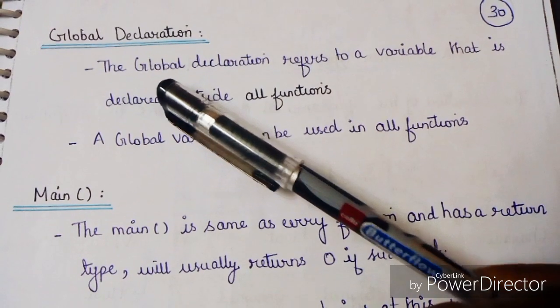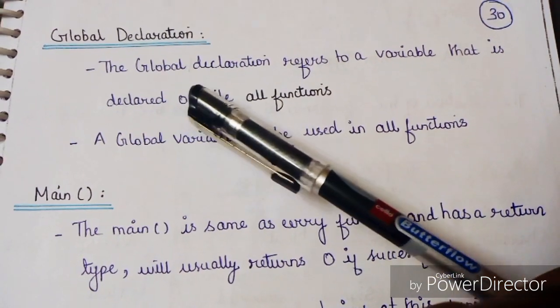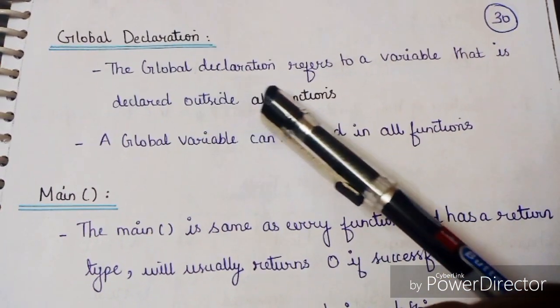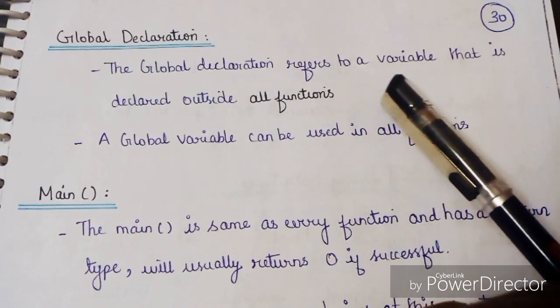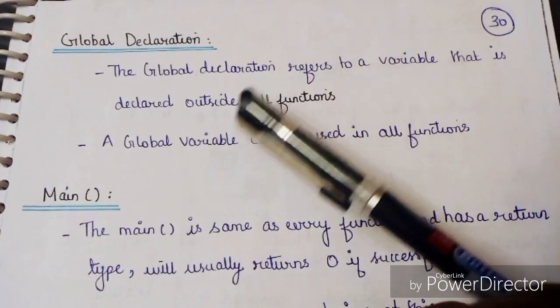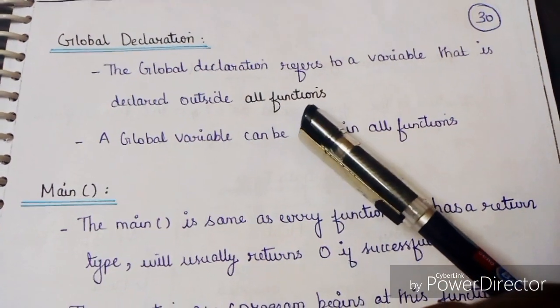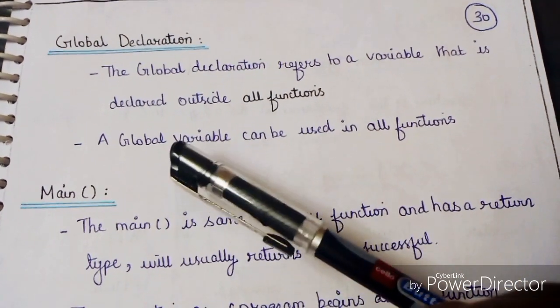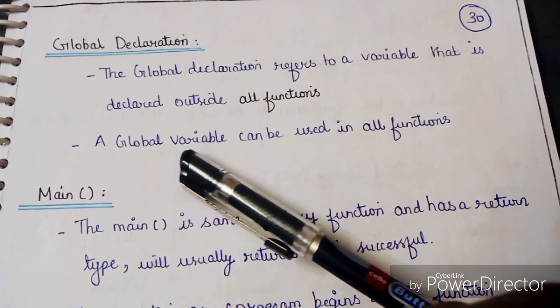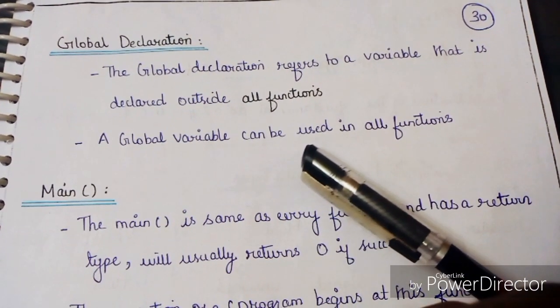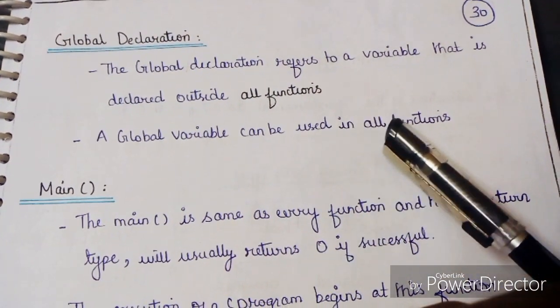The global declaration refers to variables that are declared outside all functions. A global variable can be used in all functions throughout the program.